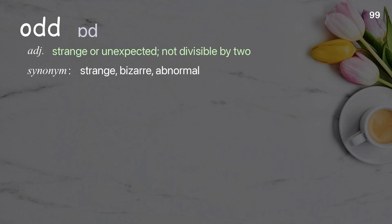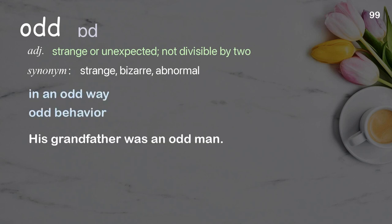Odd: Strange or unexpected; not divisible by two. Examples: In an odd way. Odd behavior. His grandfather was an odd man.